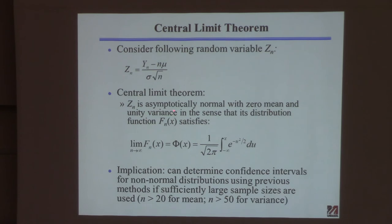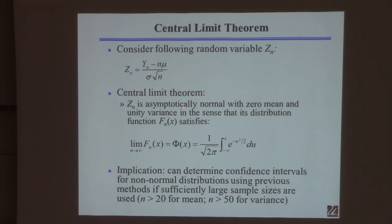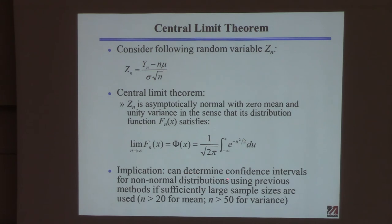As you get a large number of samples, this variable z_n follows a cumulative distribution function that is the standardized normal cumulative distribution. So if you have a randomly distributed variable and get a large number of samples, whatever distribution governed that random variable starts to look more and more normal. The implication: you can use confidence intervals and tests that assume a normal distribution even if the true distribution is non-normal, or unknown — as long as sample sizes are sufficiently large.